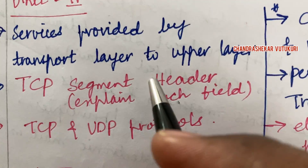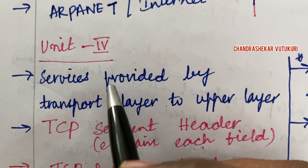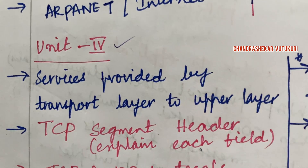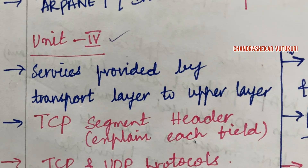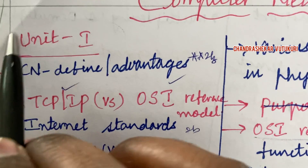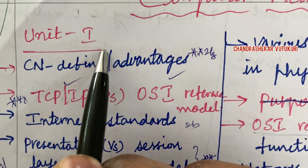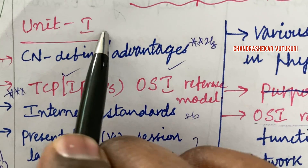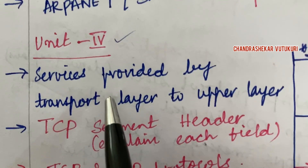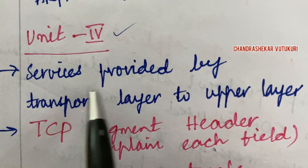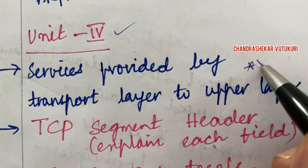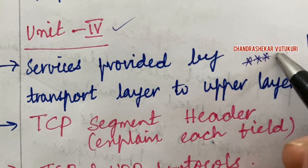I have taken up Unit 4 next — it is very short. Let me tell you the sequence of units you are supposed to work out: please work out Unit 1 first, as you need the basic fundamentals about Computer Networks. Later you can jump into Unit 4. Services provided by the transport layer to the upper layer is also said to be a gunshot question.